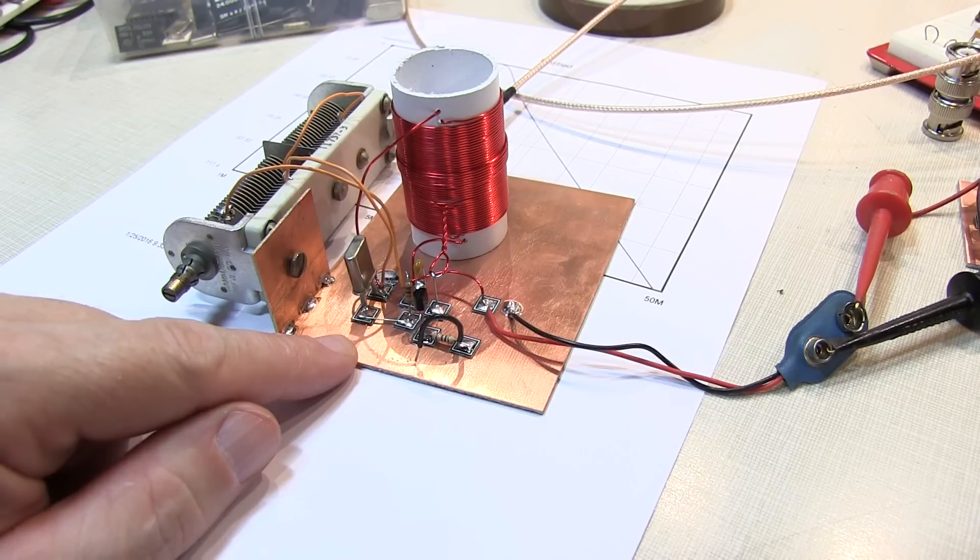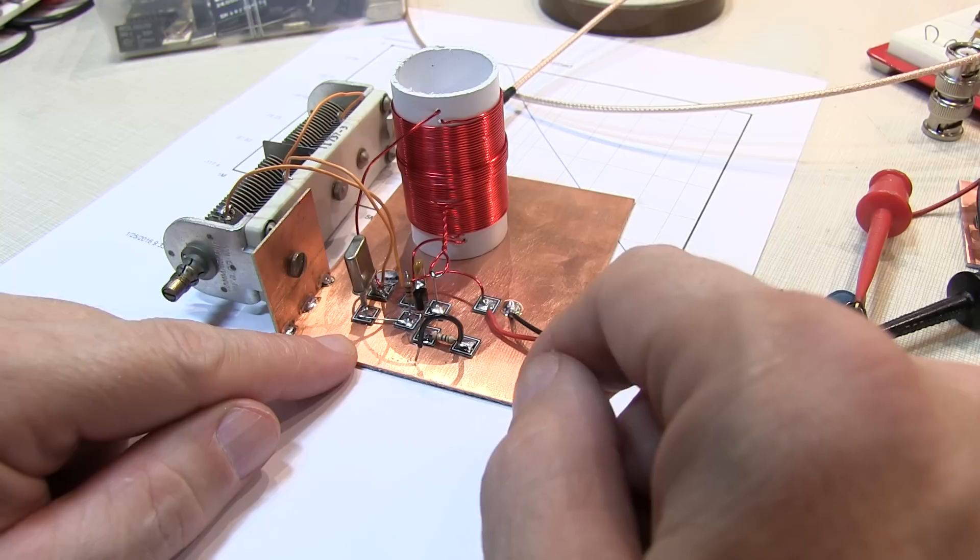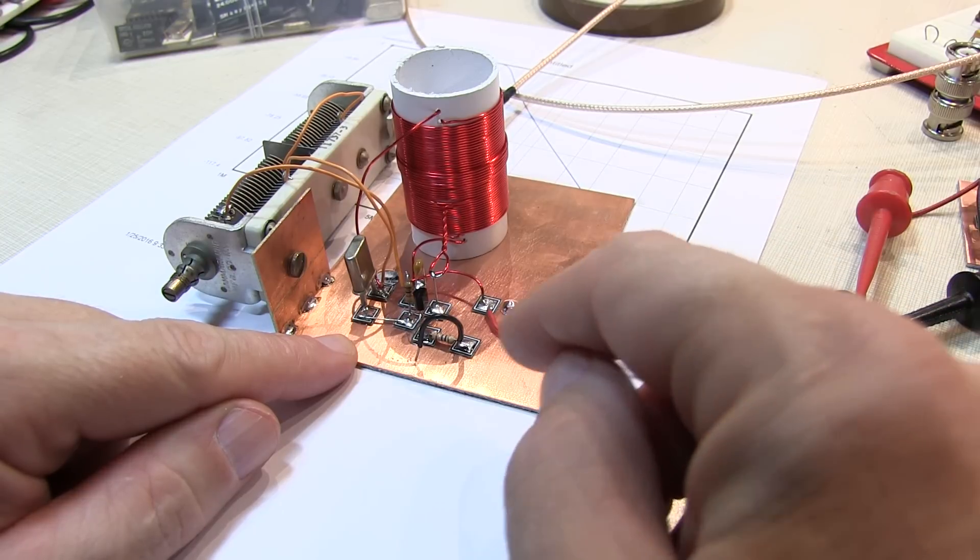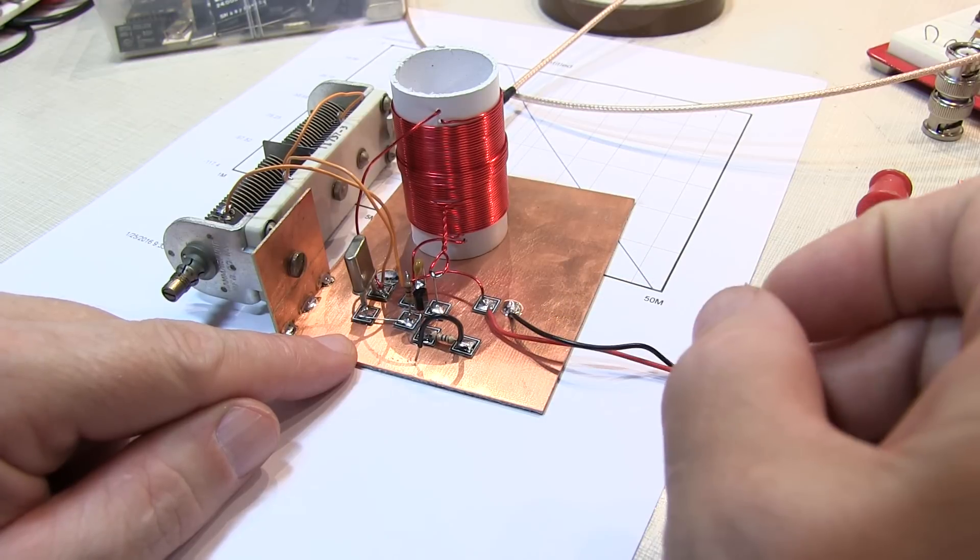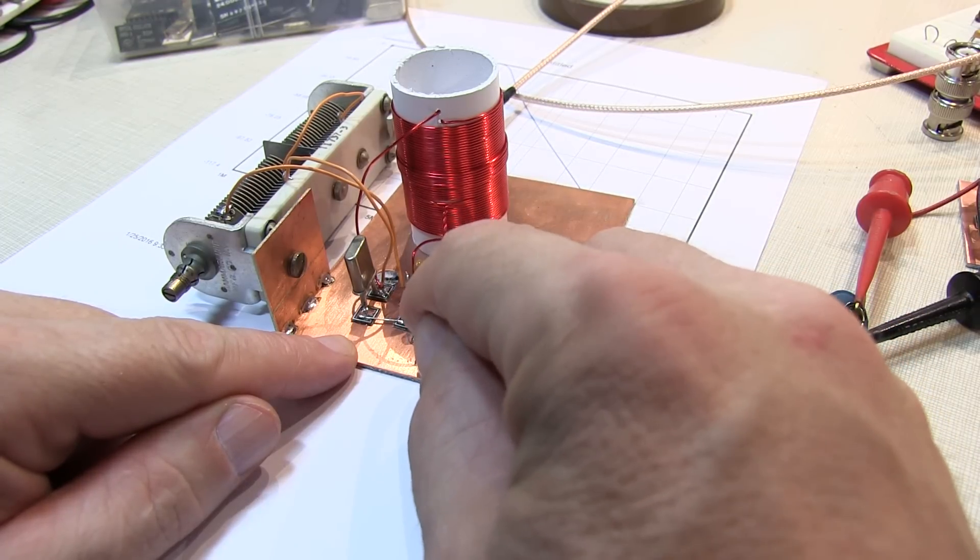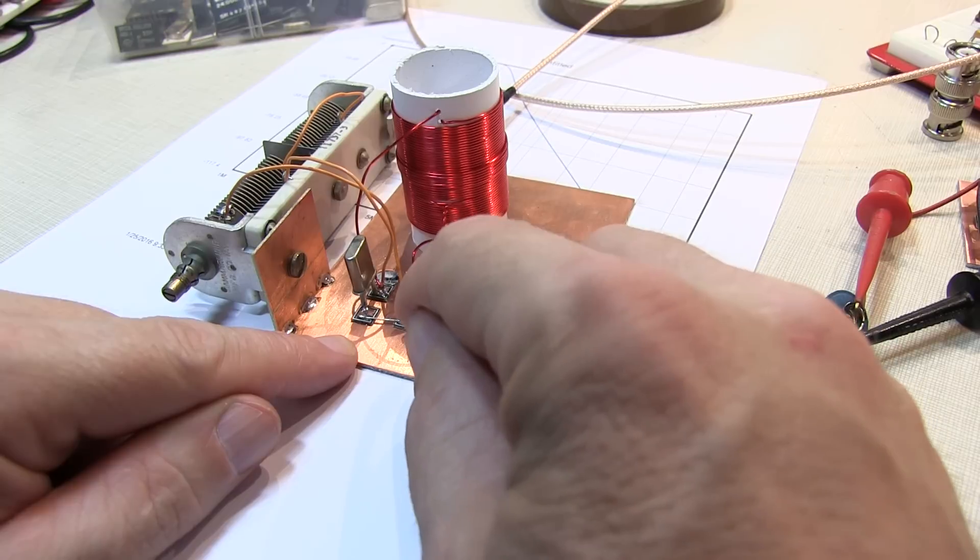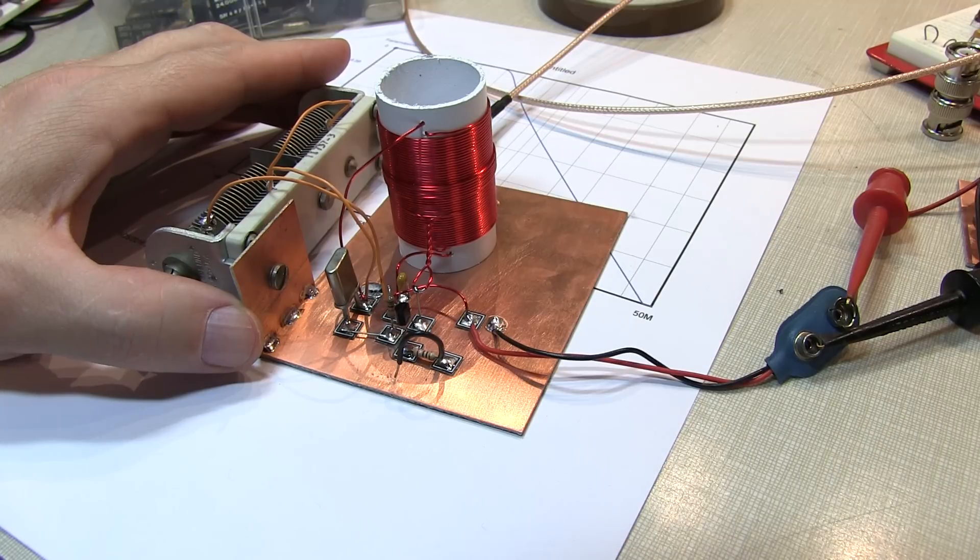So I've turned on my little shortwave receiver here, and even though I've got the Michigan Mighty Might terminated into a 50-ohm load, there's enough leakage from the circuit here that my shortwave receiver picks it up just fine. Well, that all sounds pretty good. Sounds like you're done. Well, not quite.